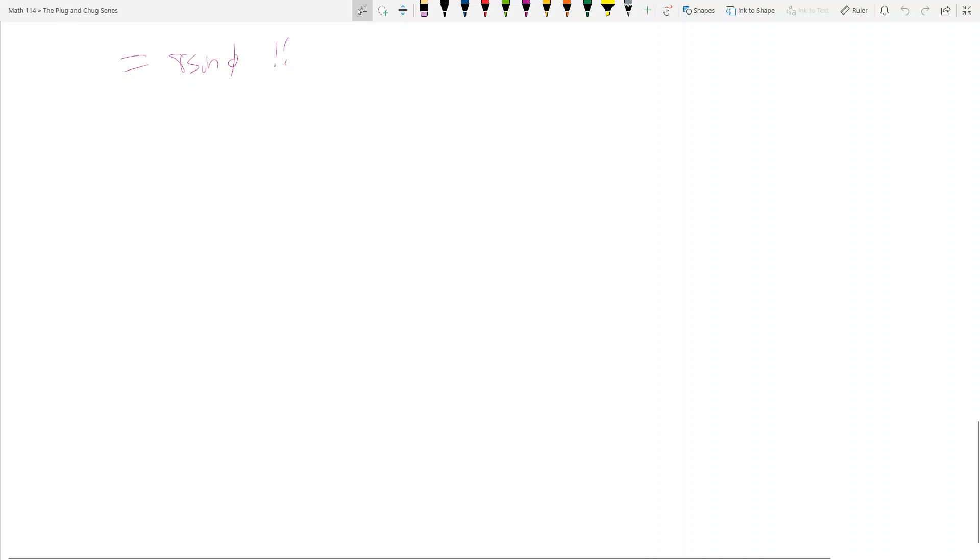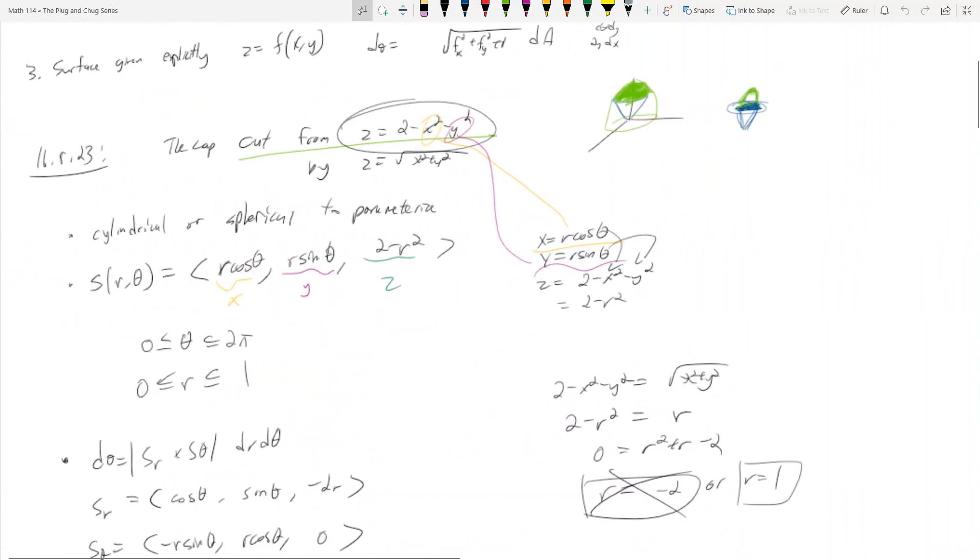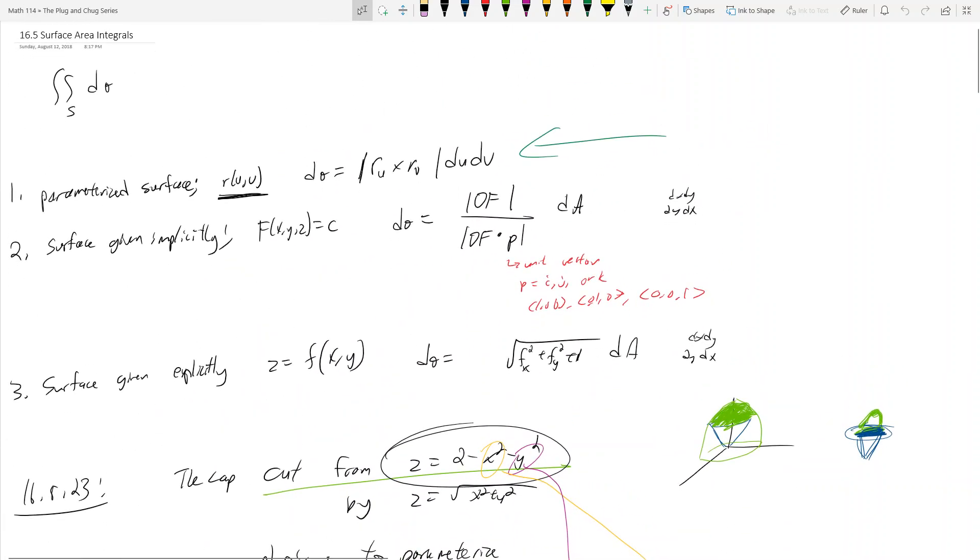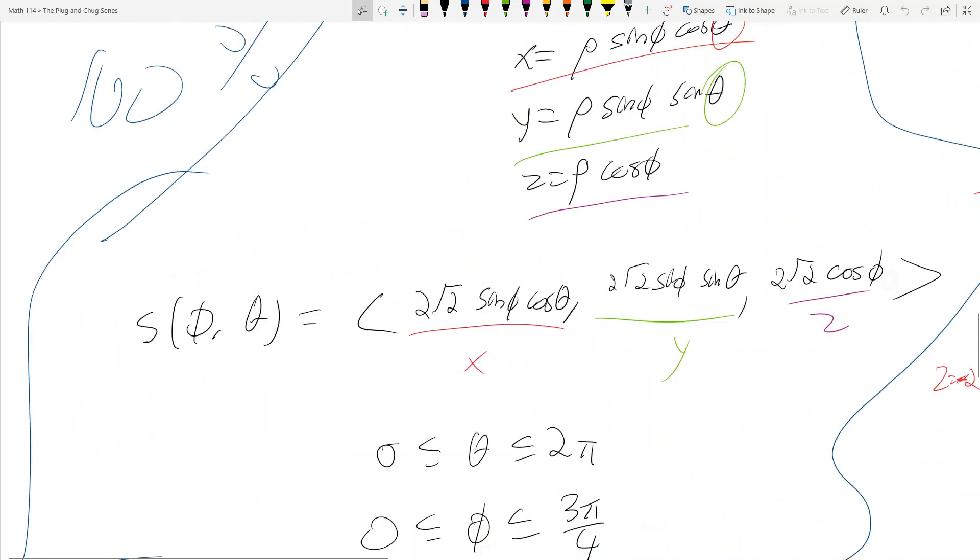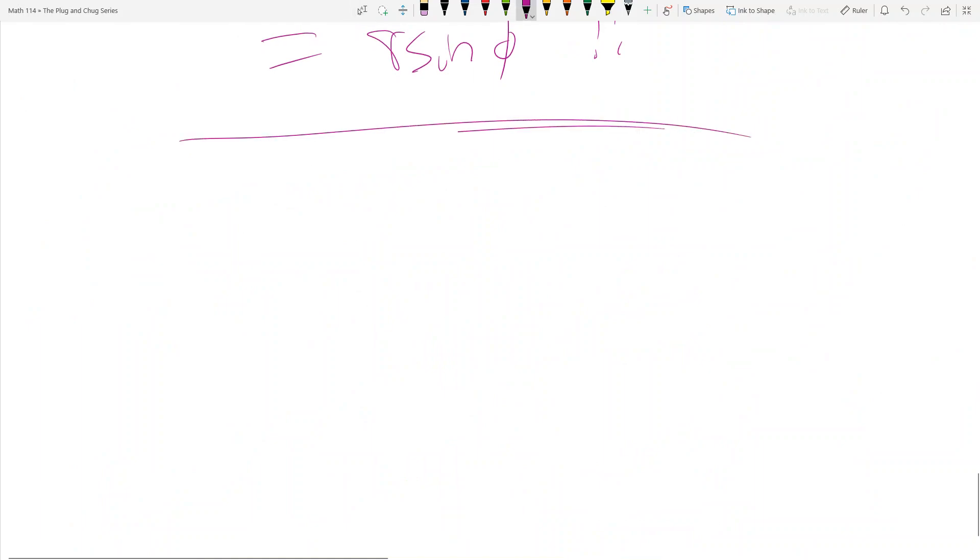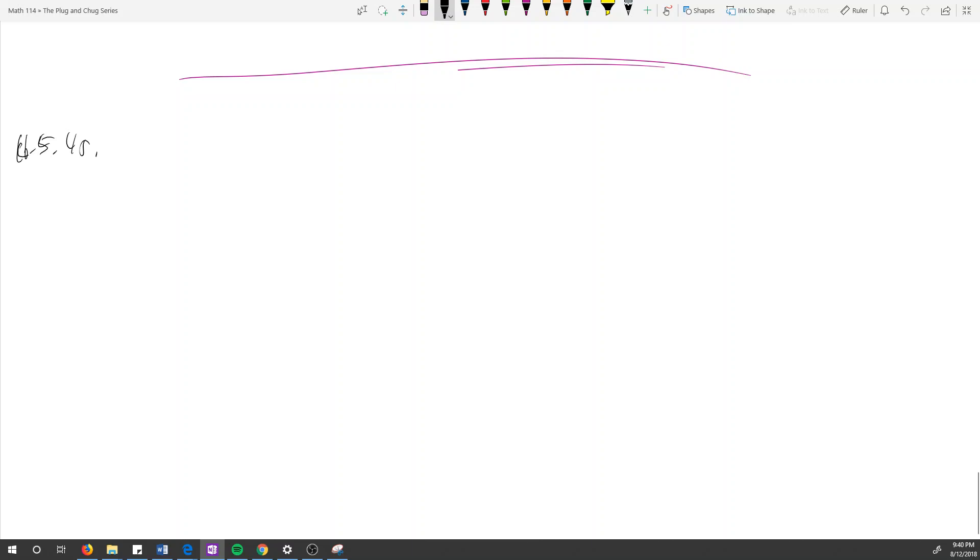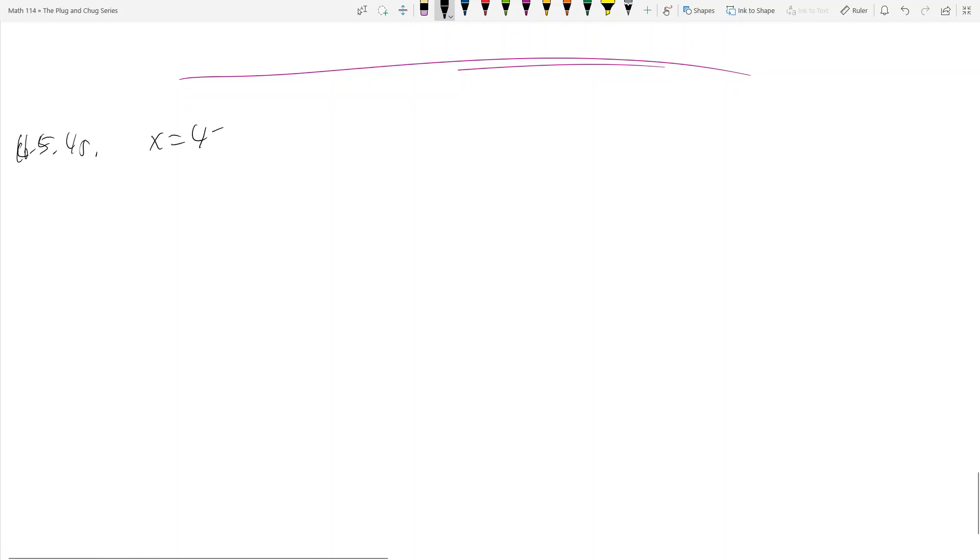Hey everyone, welcome back to chapter 16.5. We're still talking about surface area integrals, and in this video we're going to cover the case where you have an explicit form and an implicit form all in one problem. So we're going to use the explicit formula and the implicit formula. We're going to take a look at 16.5, number 45, which is the following problem. You want to find the area of the portion of the paraboloid x equals 4 minus y squared minus z squared that lies above the ring 1 is less than or equal to y squared plus z squared is less than or equal to 4 in the yz plane.